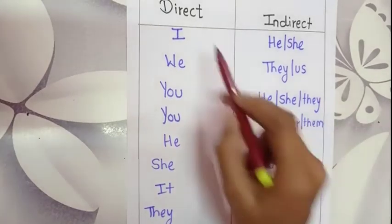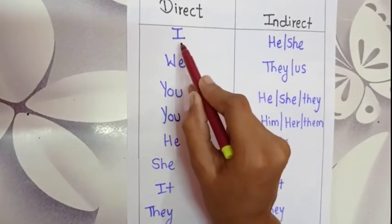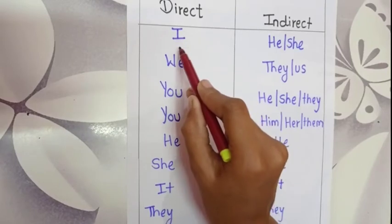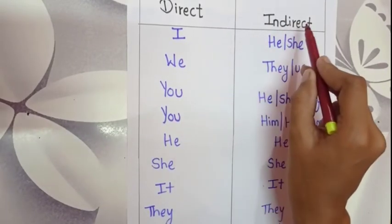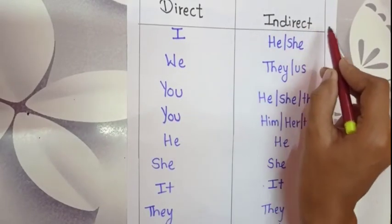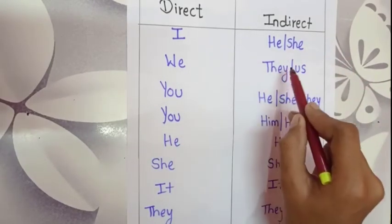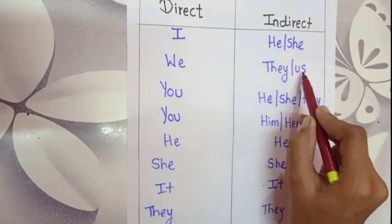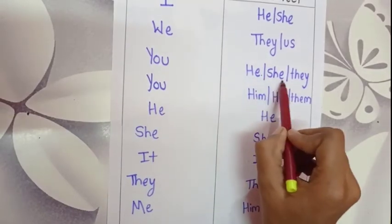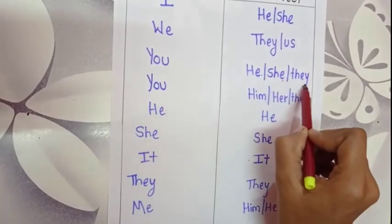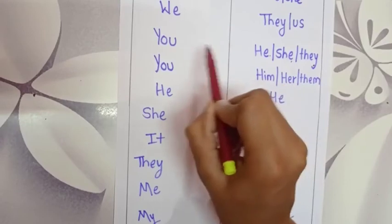To solve those questions, we should know what the respective changes we must do. In a direct sentence, if 'I' is given, it should be converted to 'he' or 'she' in the indirect sentence. 'We' should be converted to 'they' or 'us'. 'You' should be converted to 'he', 'she', or 'they' — any one of them, according to the sentence.